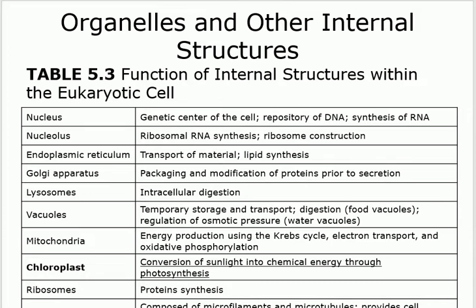Ribosomes, just like ours, are for protein synthesis. Cytoskeleton is also similar to ours — microfilaments and microtubules. In human cells, the cytoskeleton is mainly for stabilization, anchoring organelles, and keeping the shape of the cell. But in other types of eukaryotes, it also helps with movement — they can contract and push from one side, changing shape to move around. This is a unique function providing motion.